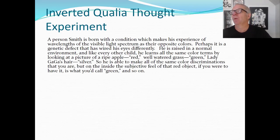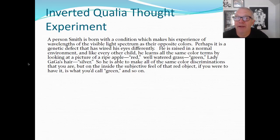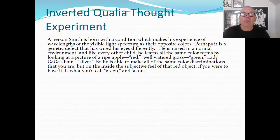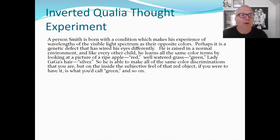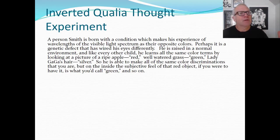Here's the thought experiment. Imagine a person, let's call him Smith, who is born with a condition which makes his experience of wavelengths of the visible light spectrum appear as their opposite colors. Perhaps it's a genetic defect that has wired his eyes differently. He gets raised in a normal environment just like you. Like every other child, he learns all the same color terms by looking at a picture of a ripe apple. A ripe apple looks different on the inside to Smith, but Smith learns to call that red just like you do. And well-watered grass, when Smith looks at it, Smith learns to call that green, even though it has a qualitatively different subjective feel to him.